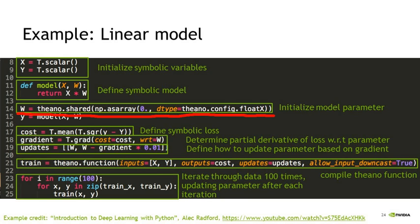How is using Theano.function different from calling the same function defined separately multiple times? Theano.function is not just saying 'define a Python function' as you would with the usual Python def. Theano.function is actually telling Theano to take the previously defined symbolic variables and expressions and compile that down to efficient code for application to numeric data on the target architecture. You're not just defining a Python function — you're telling Theano to compile a function on the underlying CPU or GPU that can be run efficiently on that hardware.